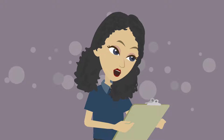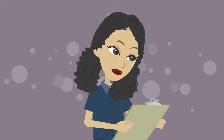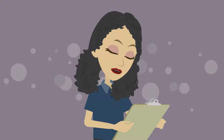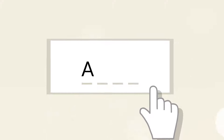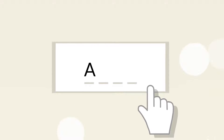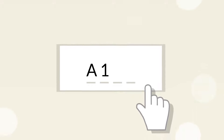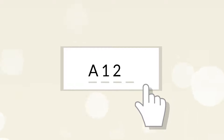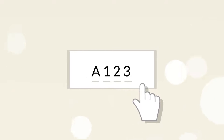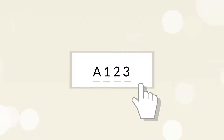How can I tell the difference between an EUA account login and a portal account login? One way to tell the difference is that EUA logins always have four-character user IDs.